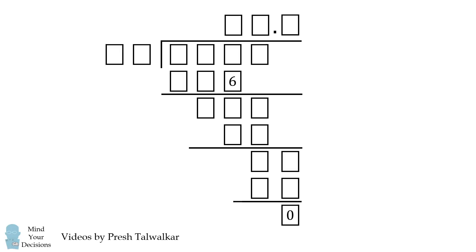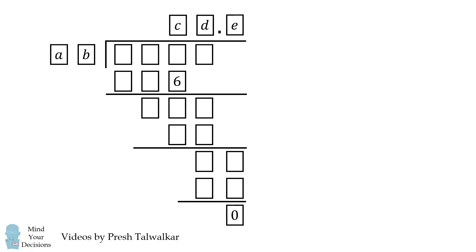So how can we figure out this problem? Suppose the divisor is the two-digit number AB and the quotient is CD.E. We'll approach the problem in four steps. We'll first deduce E equals 5, B is even, and A equals 1.